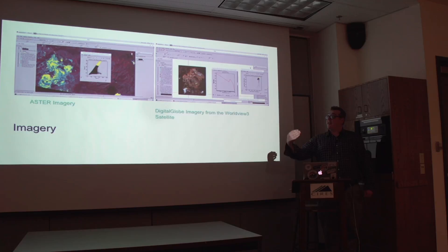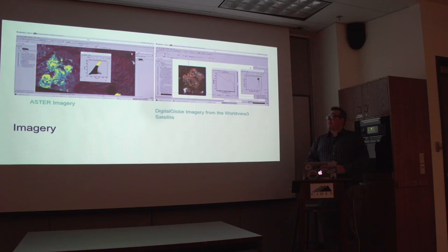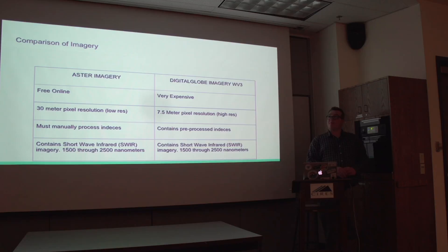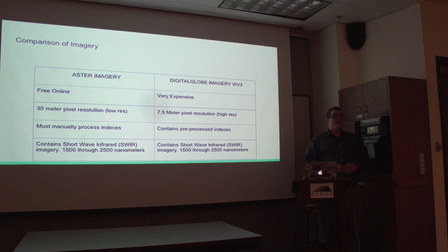On my right and your left, you see the ASTER imagery obtained from the Terra satellite network, and on the right you see the Digital Globe imagery from the WorldView-3 satellite. There are some important differences: ASTER imagery is free online, which is a tremendous advantage, however it has 30-meter-per-pixel resolution, which is not outstanding. Digital Globe, on the other hand, is very expensive and focuses only on a specific area, but the resolution quality is 7.5 meters per pixel, which is outstanding.